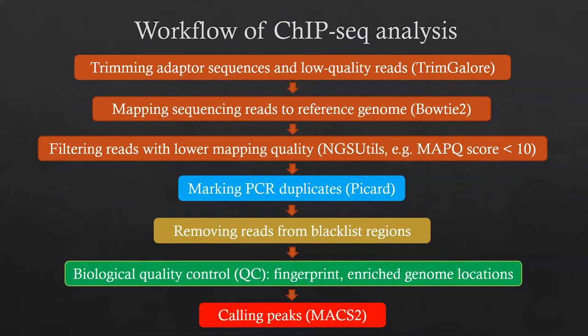For ChIP-seq data, we have a very specific biological quality control to examine the quality of the data. We use a fingerprint plot to see how good or bad the ChIP-seq data is. We also try to identify enriched genome locations to see whether the ChIP-seq makes sense. After cleaning the data, we need to identify the exact locations with enriched ChIP-seq signal. In our core, we use a tool called MACS2 to call the peaks.